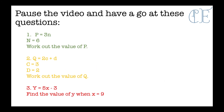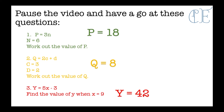Here are your answers. P equals 3n and n equals 6, which means p equals 3 times 6, so p equals 18. Q equals 2c plus d; c is 3, so 2 times 3 is 6, plus d which is 8, so q equals 14. And finally, y equals 5x minus 3, and x is 9, so 5 times 9 is 45, and 45 take away 3 is 42, so y equals 42.